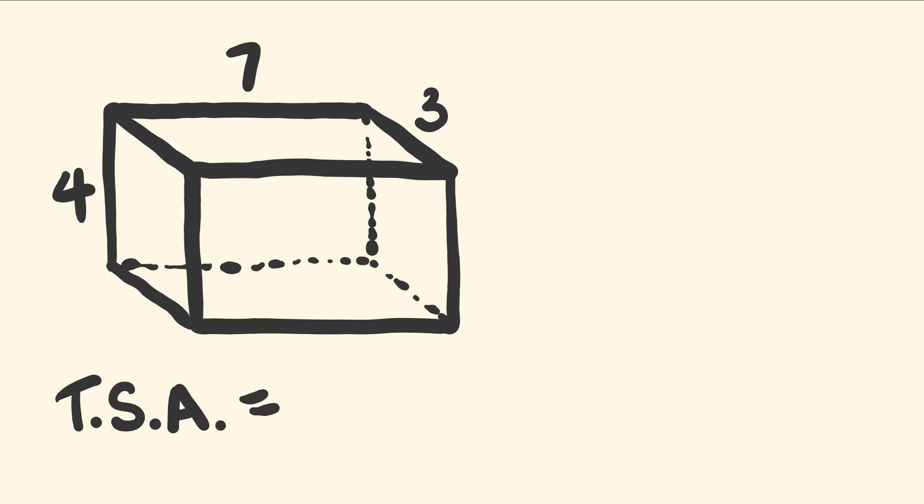So let's start off with an example and see how fast you can solve the total surface area of this rectangular prism right here. We have a height of 4 units, a width of 7 units, and a depth of 3 units. I tell you what, you should be able to solve this in around about 5 seconds. Give this a go.